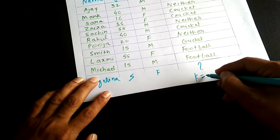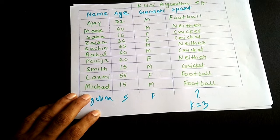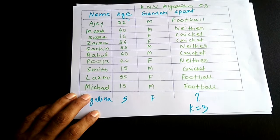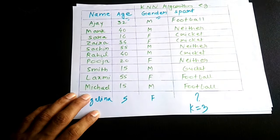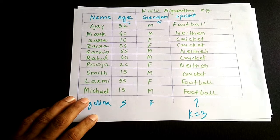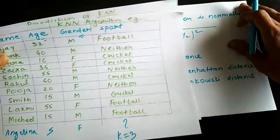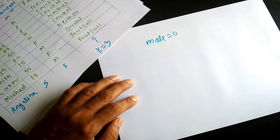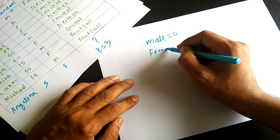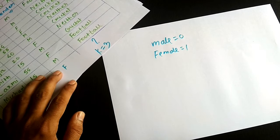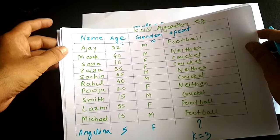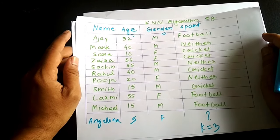Some of our data is numeric — for example, age — and some is discrete, like gender. First, we need to convert discrete data to numeric. We identify male as 0 and female as 1. After converting all data to numeric, we can proceed with the KNN algorithm.